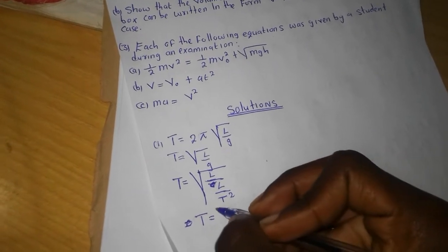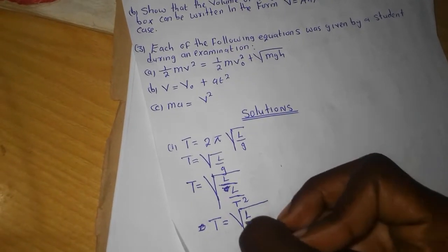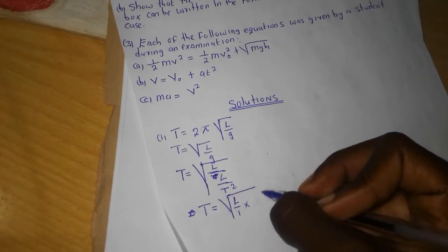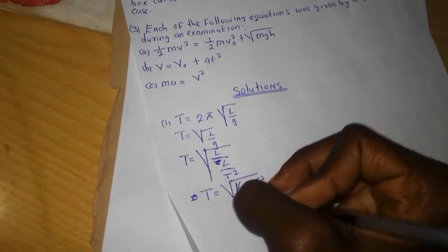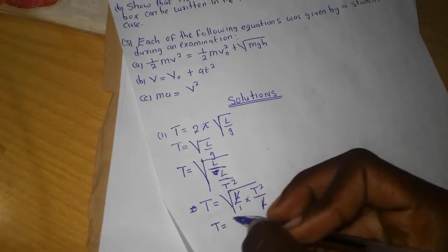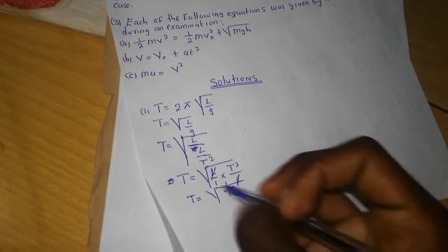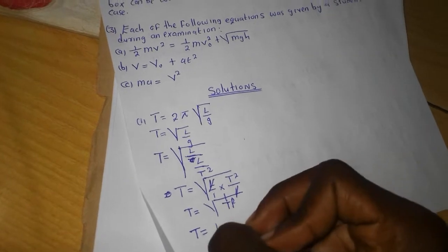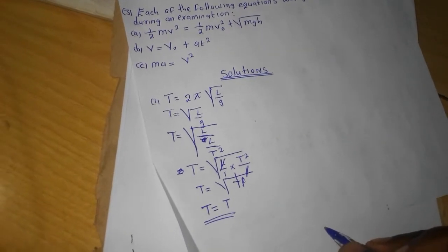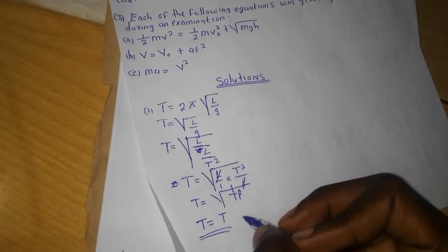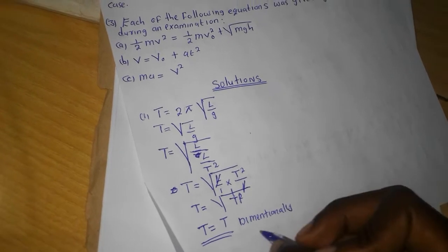So T equals the square root of L over G. We can rewrite this as L over 1 multiplied by T squared over L. Algebraically we are able to cancel the two L's, leaving T squared under the square root. Taking the square root gives T. The right-hand side and the left-hand side are equal, therefore the formula is dimensionally correct.